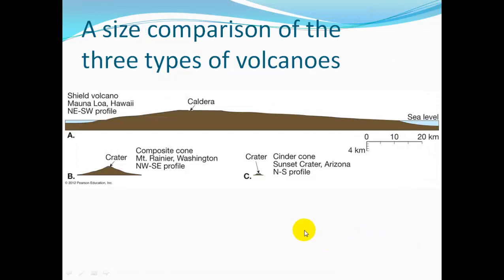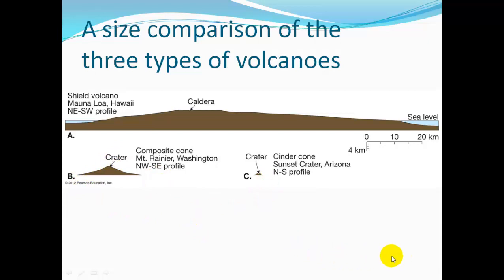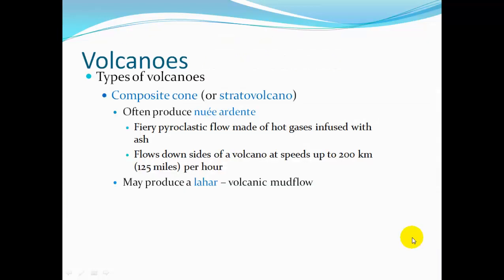In a size comparison, the Hawaiian shield volcano is very large but not necessarily very tall. Cinder cones are nice and small. And composite cone volcanoes are large.